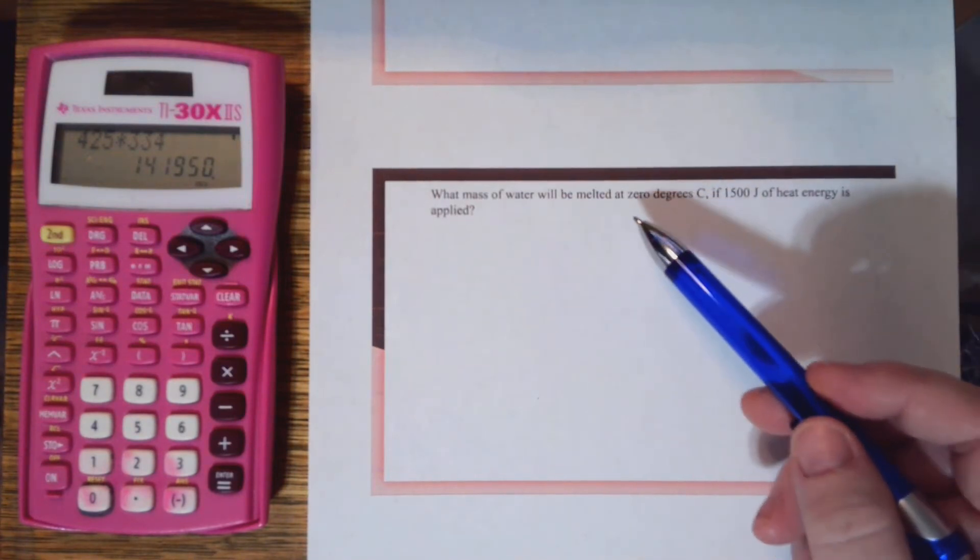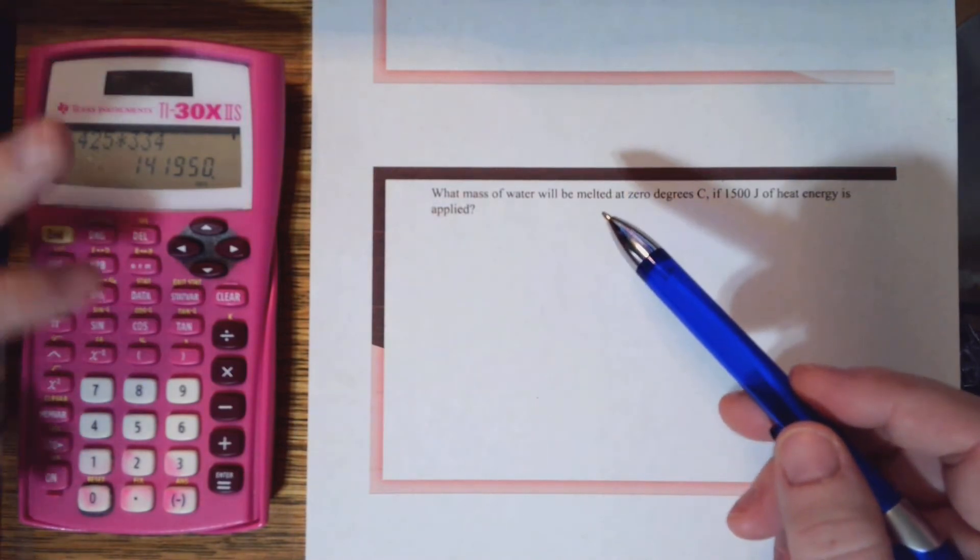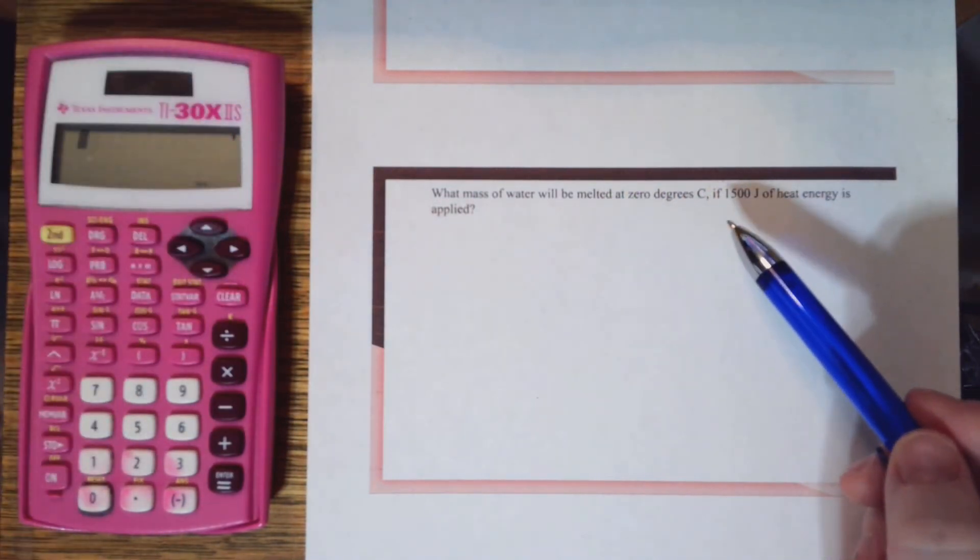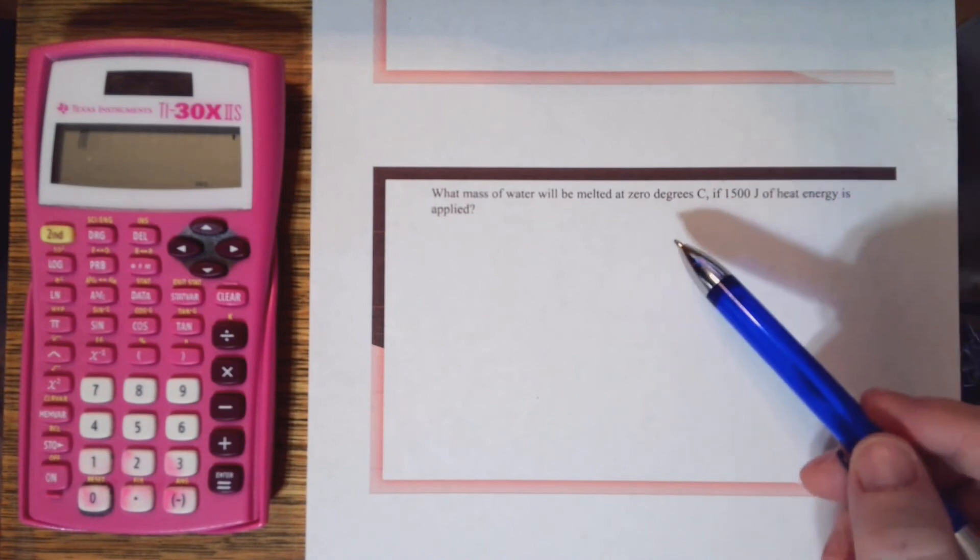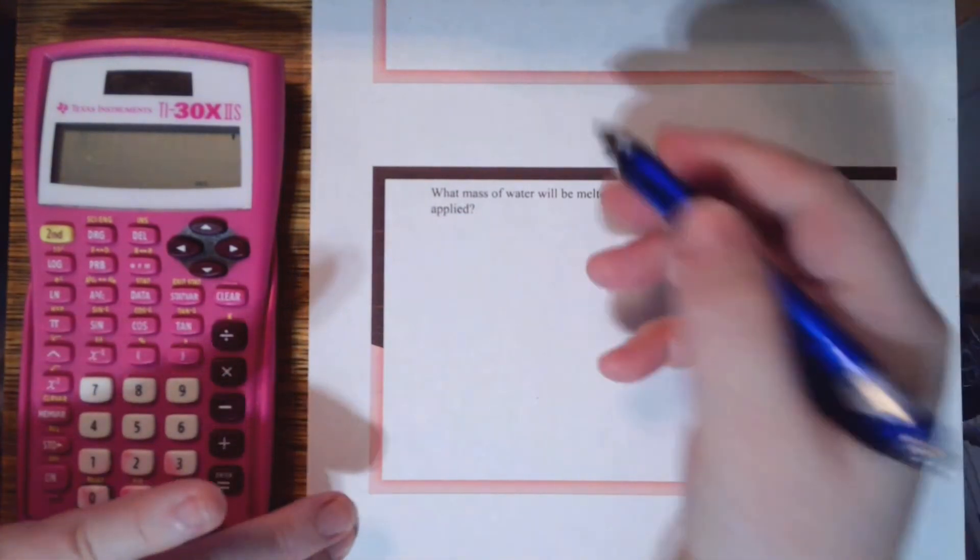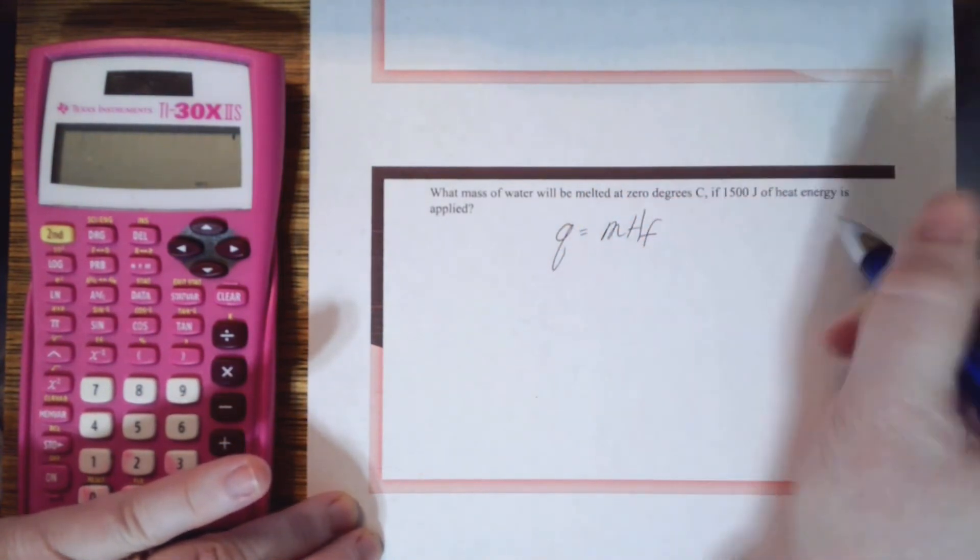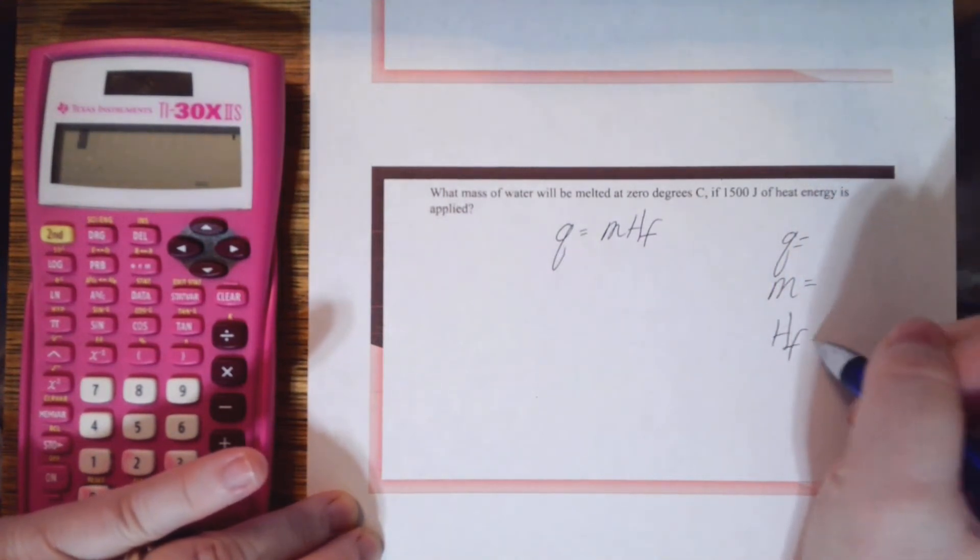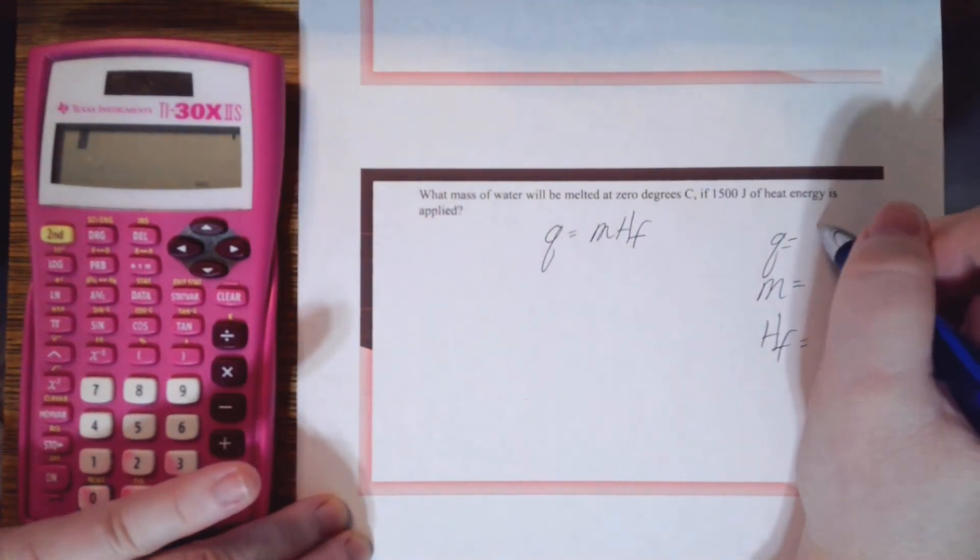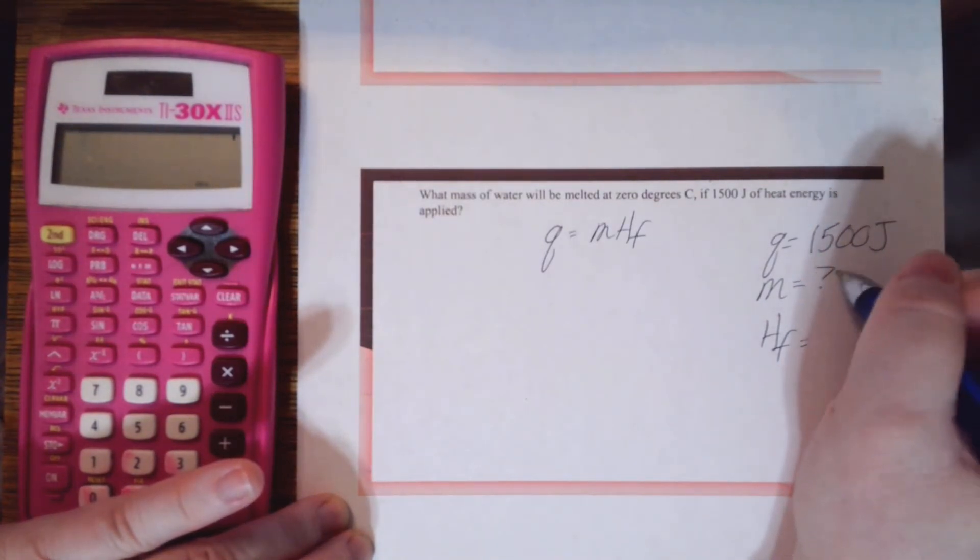Okay, what mass of water will be melted at zero degrees Celsius if 1500 joules of heat energy is applied? Although it does mention a temperature, it does say melted, so let's think about that. There is no temperature change. Zero is just the melting point, so I'm going to use exactly the same formula that I just used.